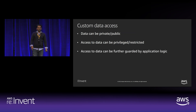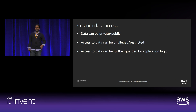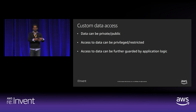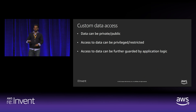The third type is custom data access, which is a combination of public and private. Access to certain parts of private data can be privileged or restricted, and access can be further guarded by application logic — custom rules and things like that. Custom data access is most likely the common case because it's driven by application business logic, which determines which user can access which data.